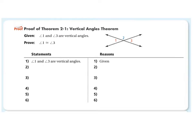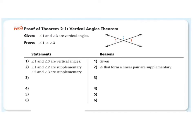From there, we make another statement to help build the case. We have the idea of a linear pair — angles that form a linear pair are supplementary and sum to 180. So angle one and angle two are supplementary, and angle two and angle three are supplementary. That means the measure of angle one plus the measure of angle two equals 180, and the measure of angle two plus the measure of angle three equals 180. That is the definition of supplementary angles.